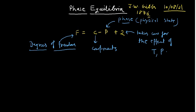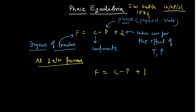If you fix one of them — say, at 1 atmospheric pressure — then the phase rule changes and it becomes F equals C minus P plus 1. Why plus 1? Because this 2 accounts for the effect of temperature and pressure, but if I fix the pressure at 1 atmospheric pressure, there is no need to put that 1 for pressure. So we write the effect of temperature only, which gives 1, and this is known as the reduced phase rule.